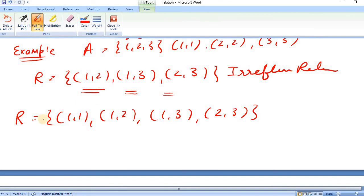Here we can say for element 1 which is belonging to set A, (1,1) is belonging to R. You can see this is here. And this is the violation of the condition.